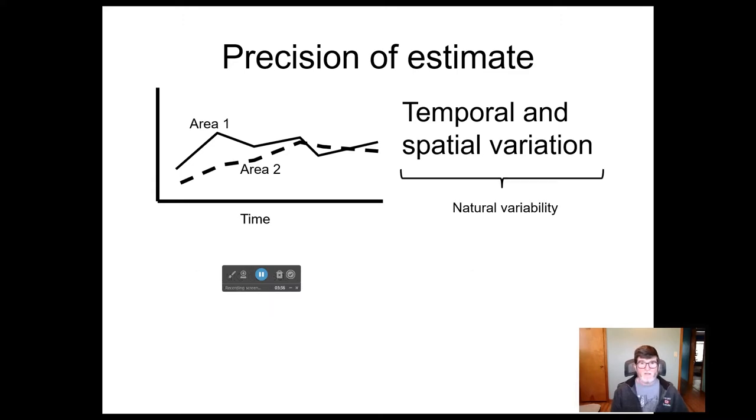Unfortunately, though, that's not the only source. These are natural sources of variability. But it's not the only source of variation that's going to cause our estimate to be not exactly the same as the true value of the mean.